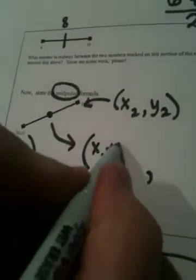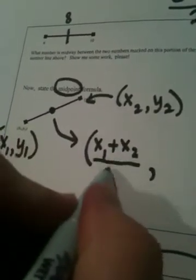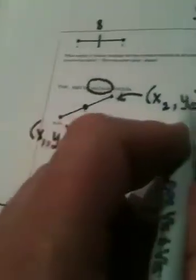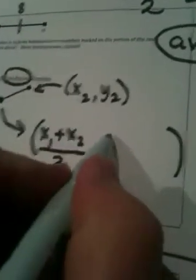The way I get that ordered pair is I average. So, the x value here was x sub 1. This was x sub 2. How do I average? I add and I divide by 2. How do I average the y coordinates? Well, I add them and I divide by 2.